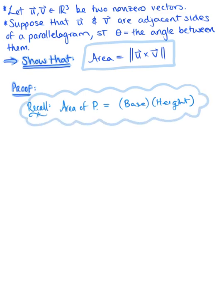To help us out, let's think about a visual representation. Here is vector v and here is vector u, with theta being the angle between them. By vector arithmetic and the parallelogram rule, we can define our parallelogram, and our job is to find the area — the region in between.